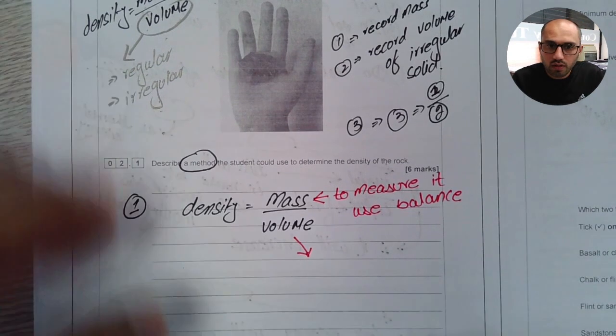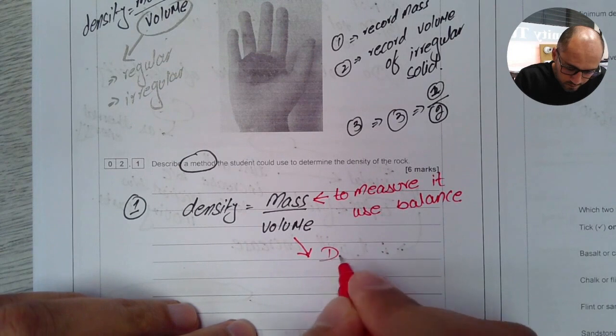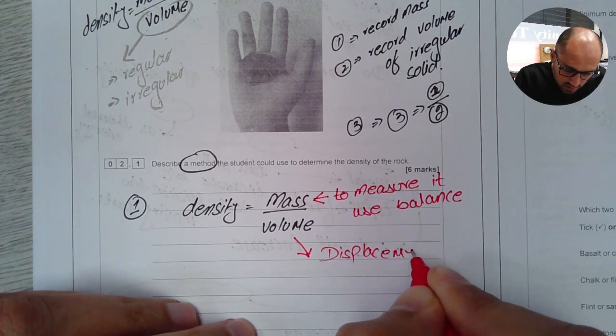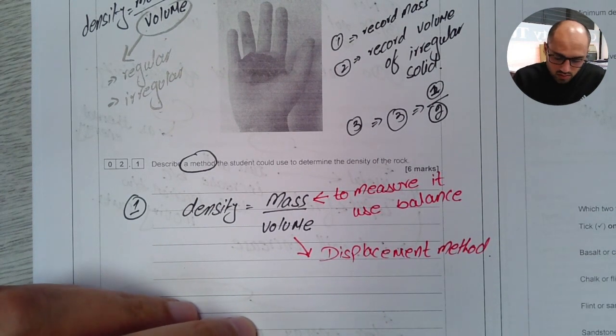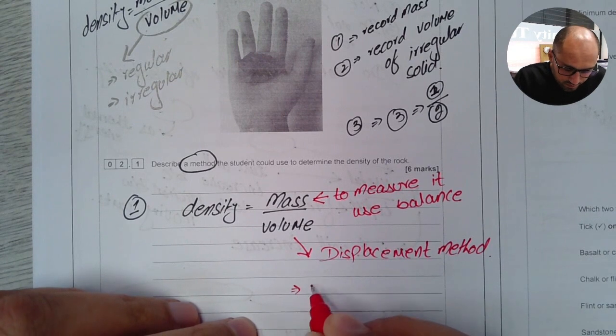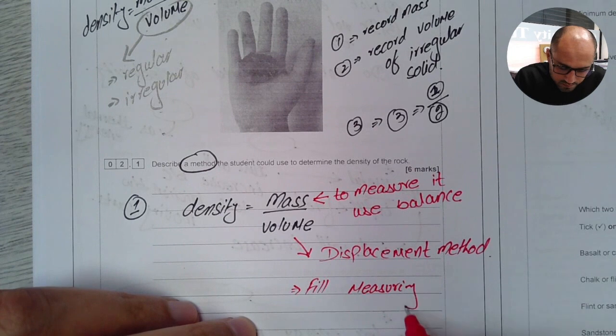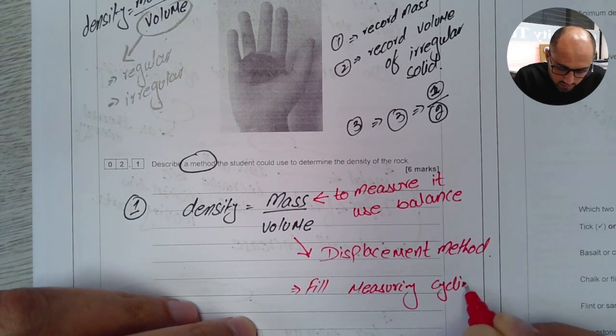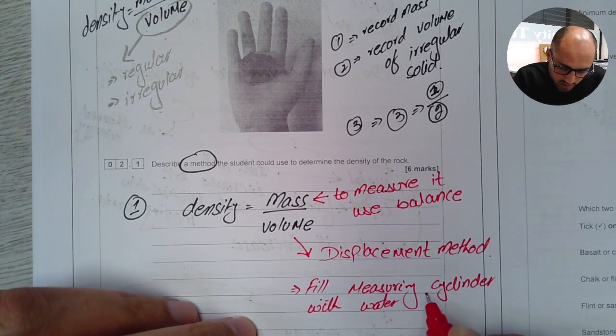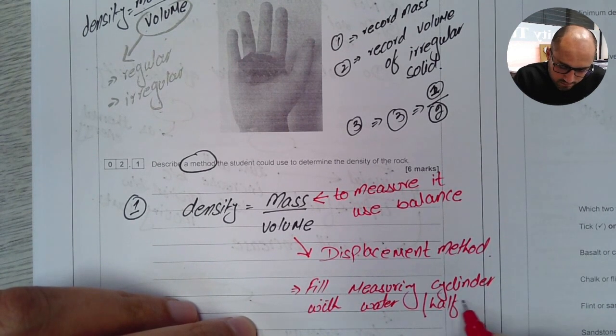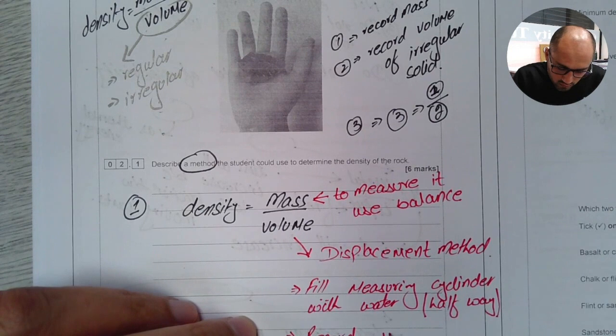To measure the volume, I'll have to use displacement method now. So I'll use displacement method. Now we need to describe what is displacement method. So I can say fill measuring cylinder with water, but I can say halfway. Then I'll say record volume.